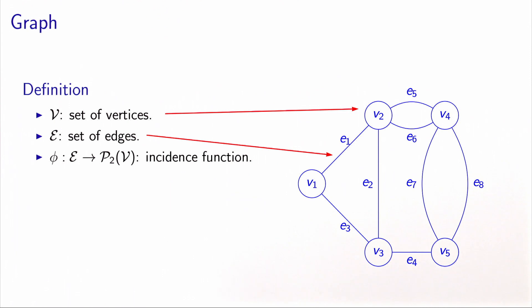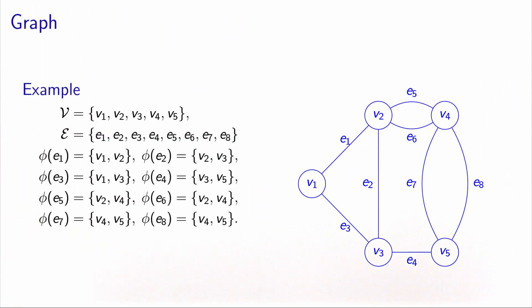In our case, we have five vertices labeled v1 to v5 and eight edges labeled e1 to e8. If we look at the definition for this very simple example, the set of vertices is v1 to v5, corresponding to the five circles on the picture.